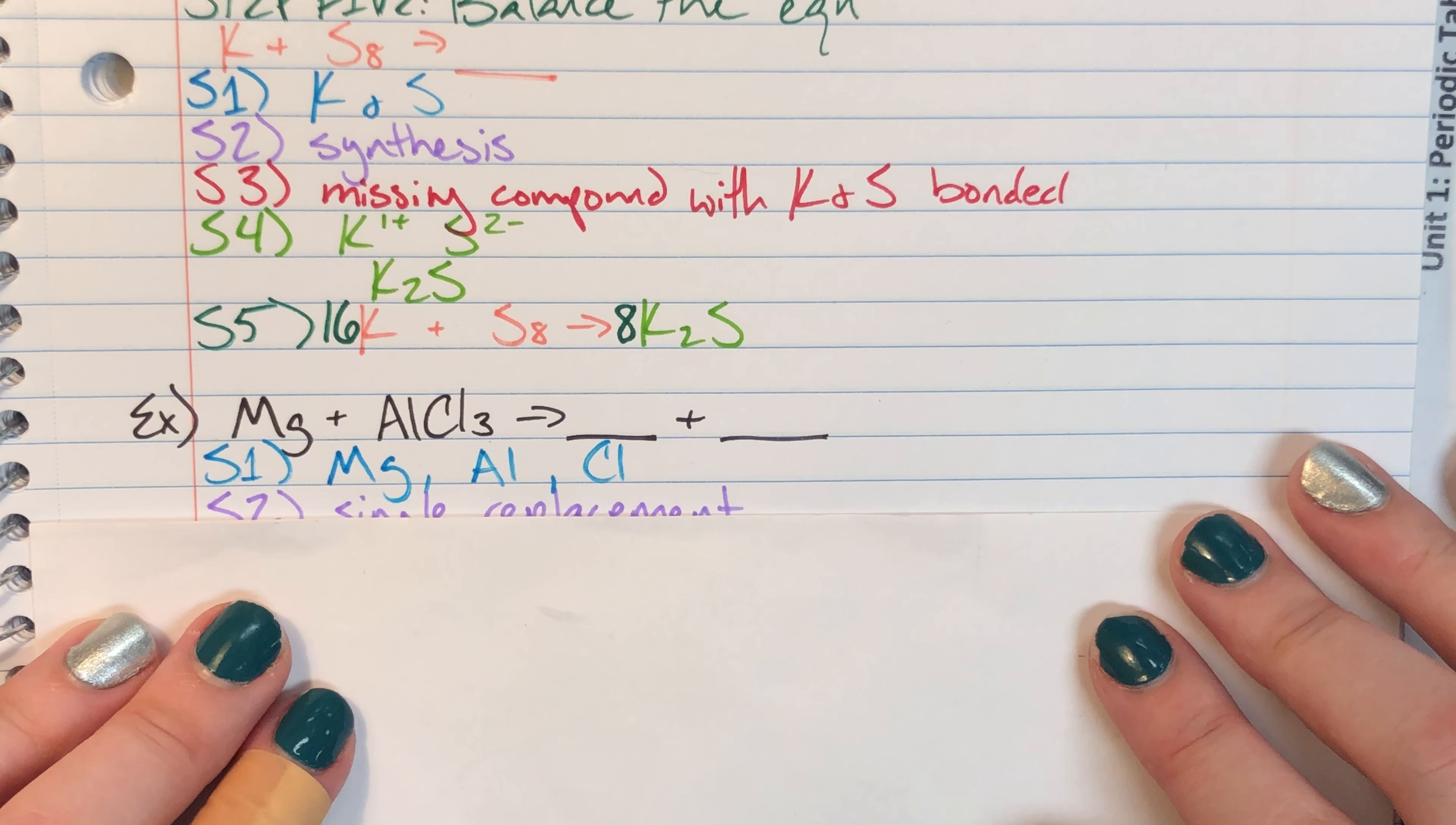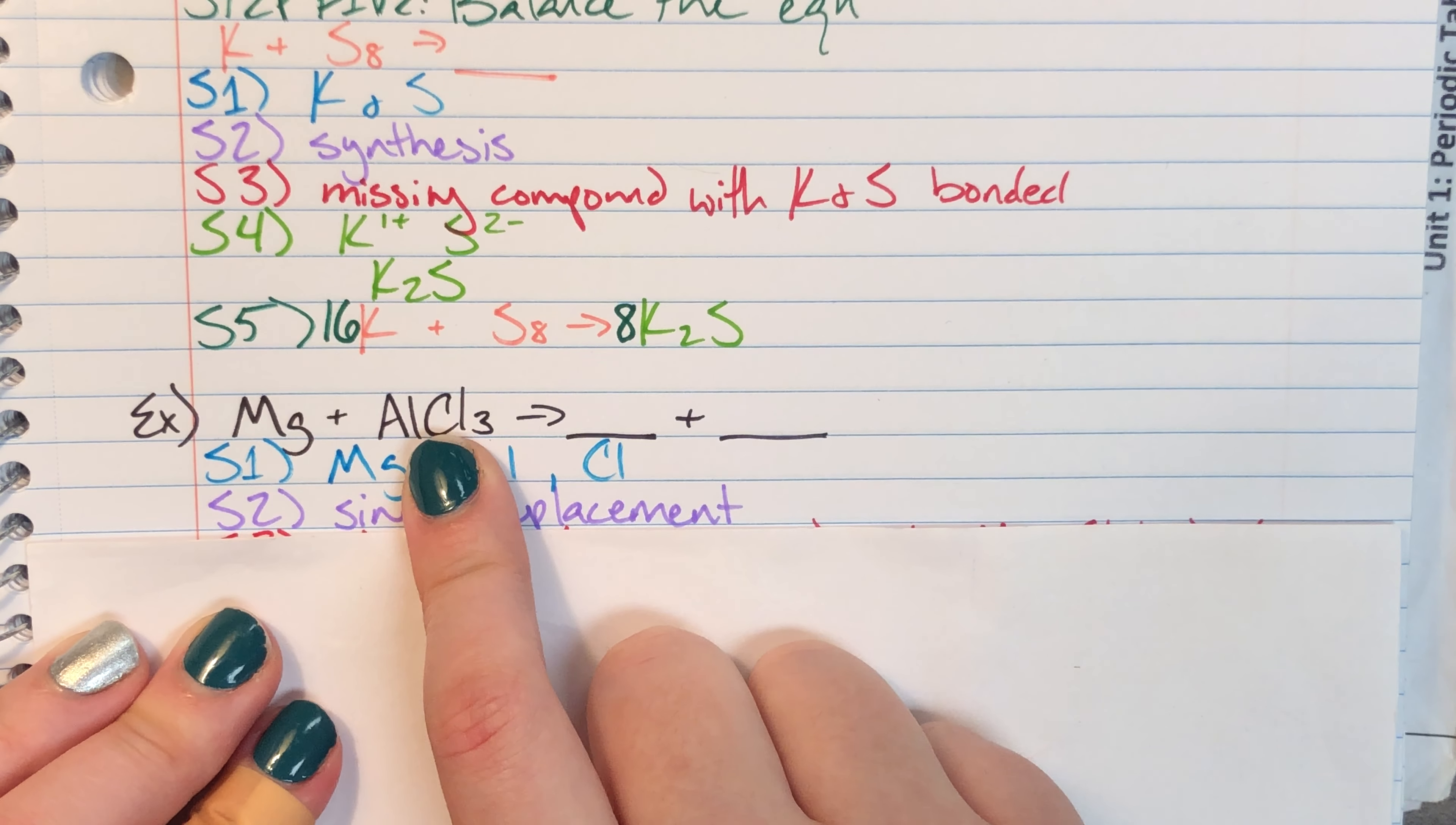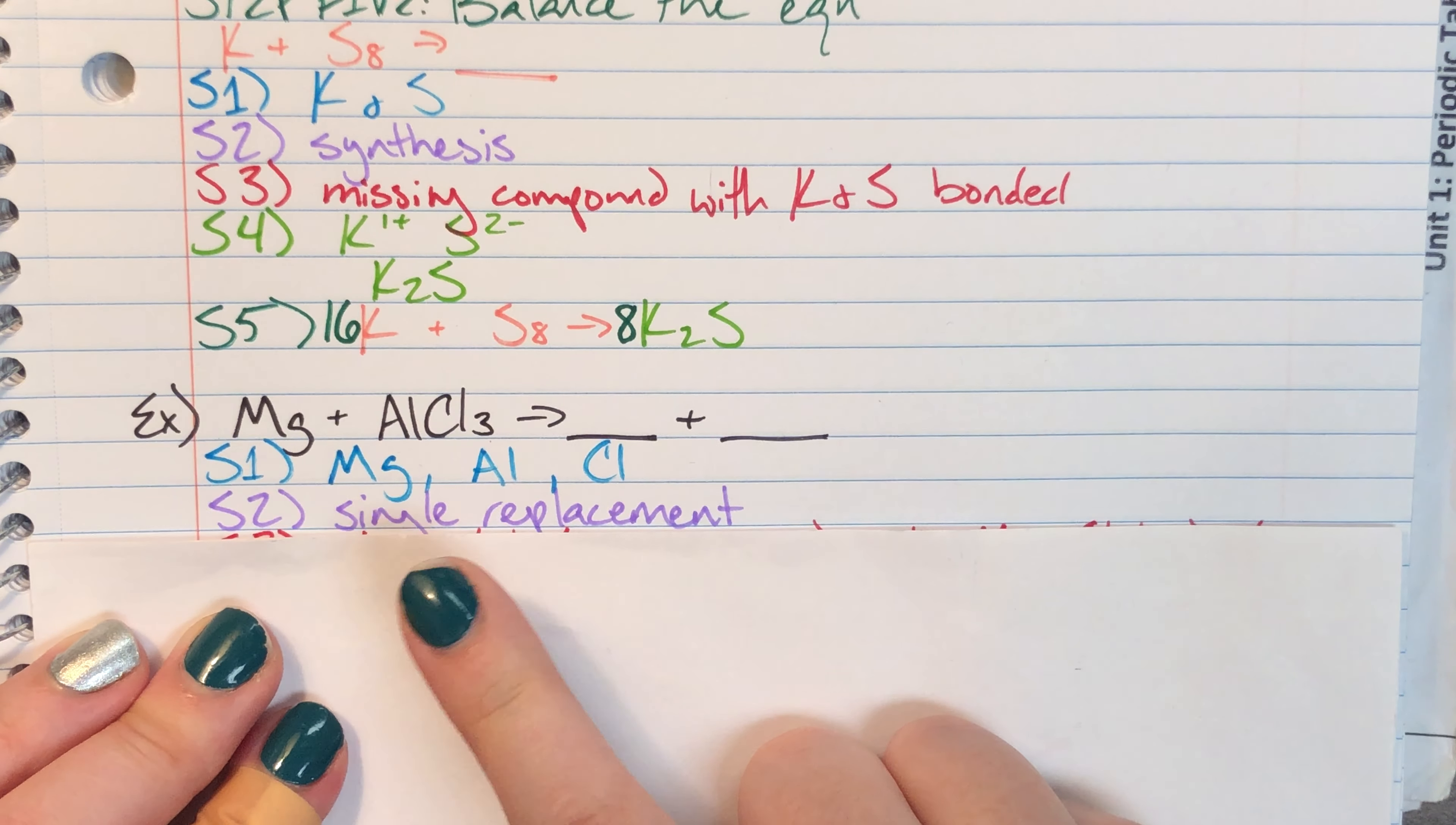Step two, I'm gonna go ahead and identify the type of reaction. This is going to be a single replacement reaction. I know this because I have a single element added to a compound producing two products and that generally follows the pattern of a single replacement. So I'm going to identify this as a single replacement.